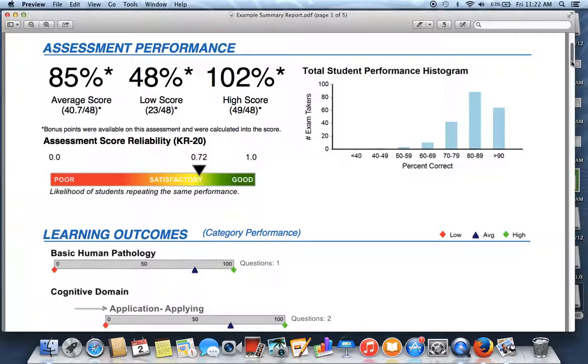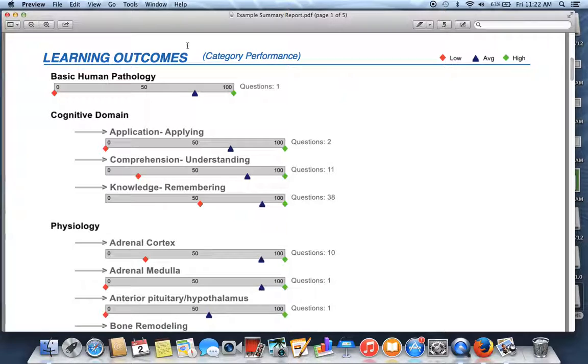Down below that, we have our learning outcomes, or category performance. This is where those categories that you chose for each question really come in handy. The students get a version of this on their personal summary report after the exam scores are released. So you can see how it would really help them identify where they might need to study a little bit more and where their weaknesses are.